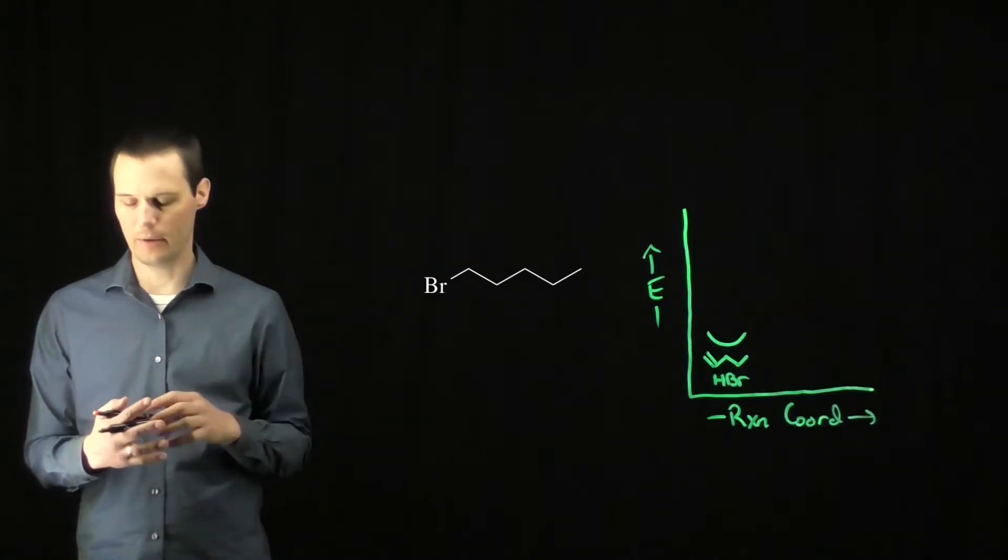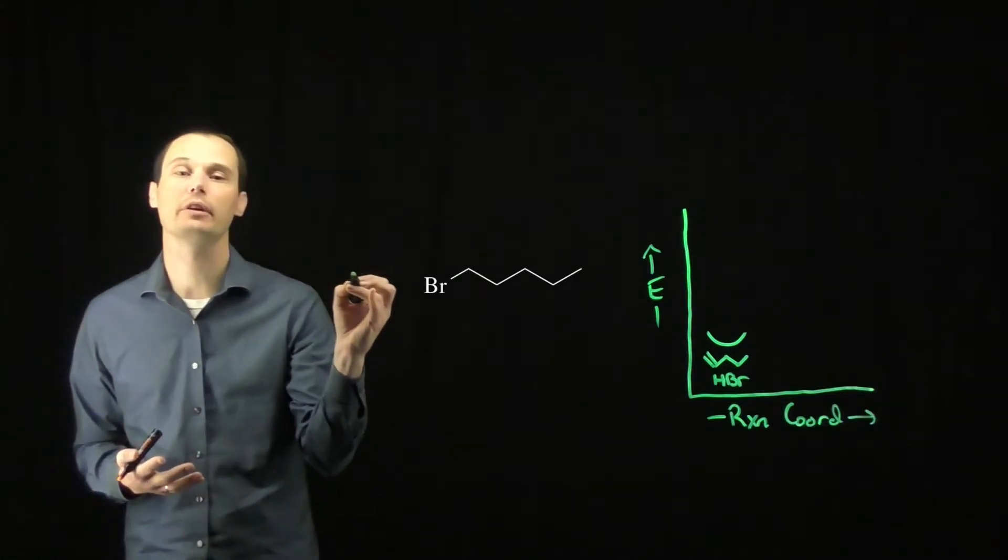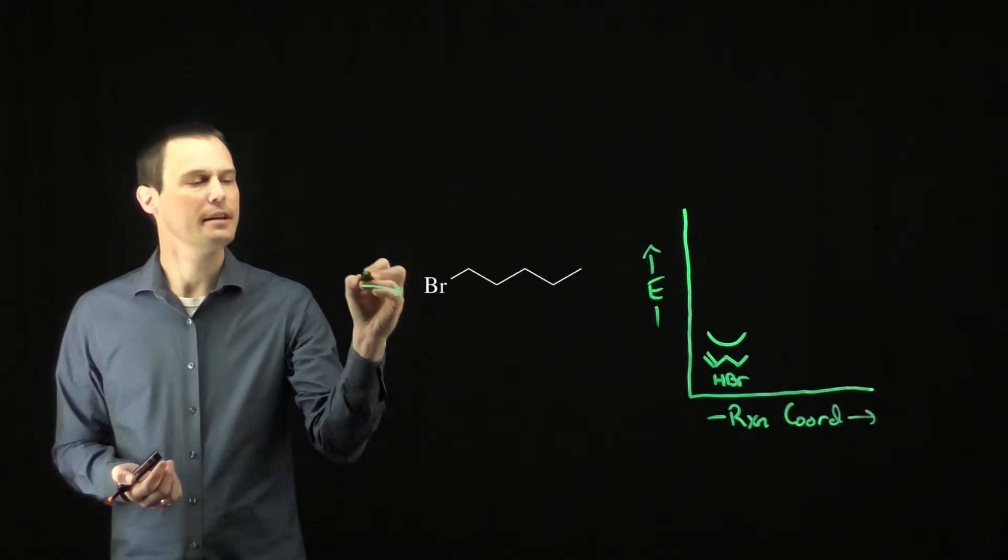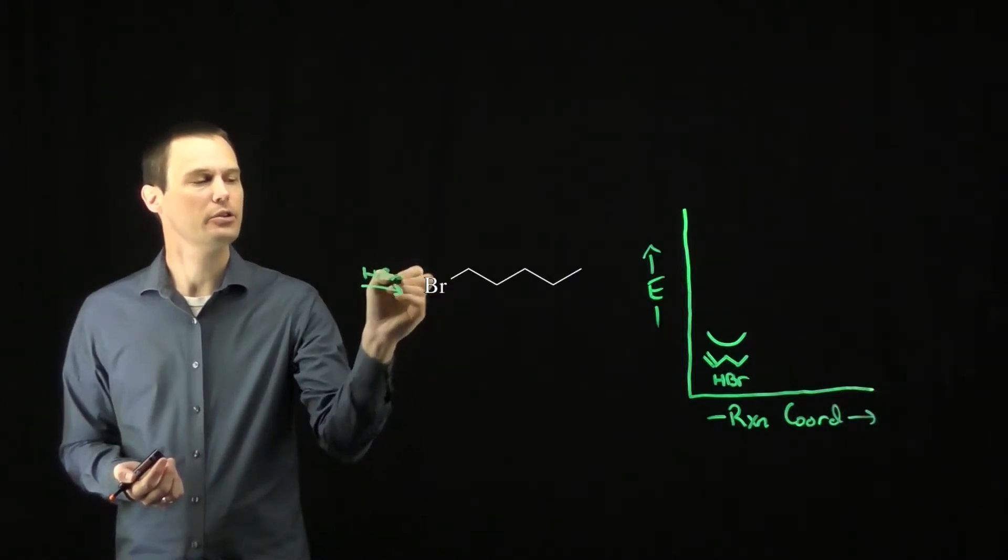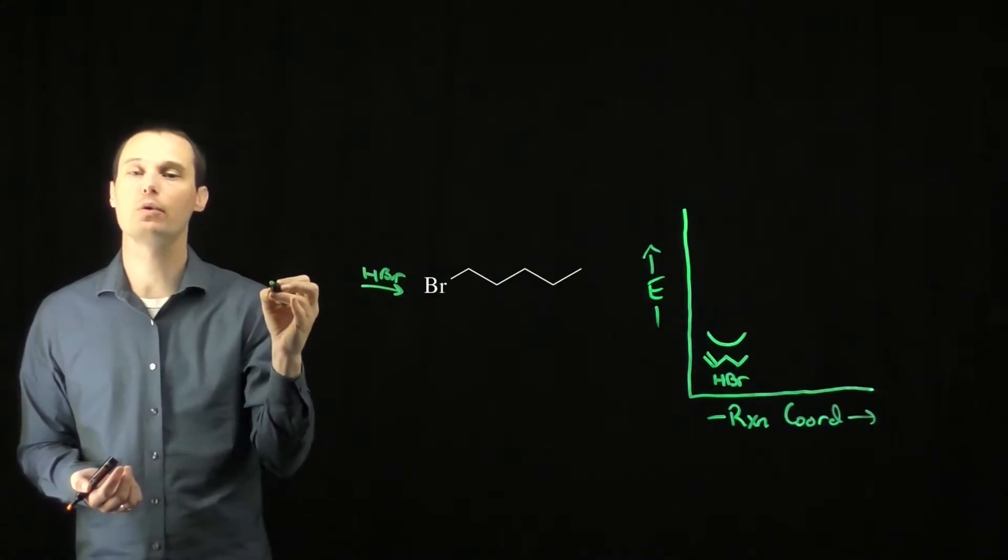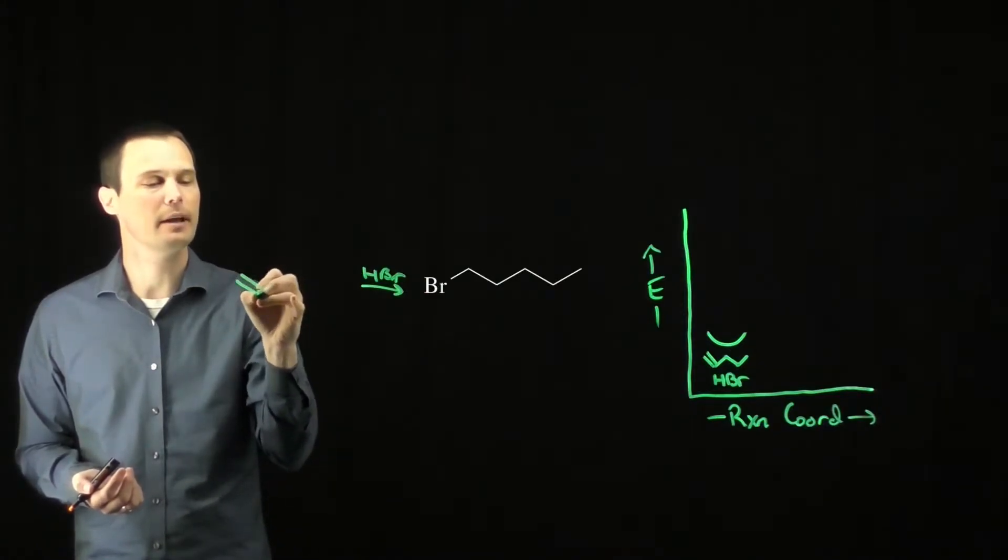This question asks us why a primary alkyl halide cannot be formed from an electrophilic addition reaction. What that's saying is that if we took a starting material and reacted it with HBr, we would not be able to form the primary alkyl halide product.